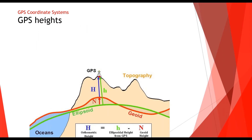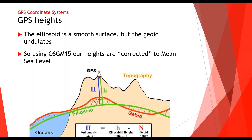Moving on, the coordinate reference system is made up of a grid which specifies where we are located relative to the easting and northing, positioning us at a location. We also then need to know elevations. As we all know, we reference height relative to mean sea level — and what controls mean sea level is gravitational pull.